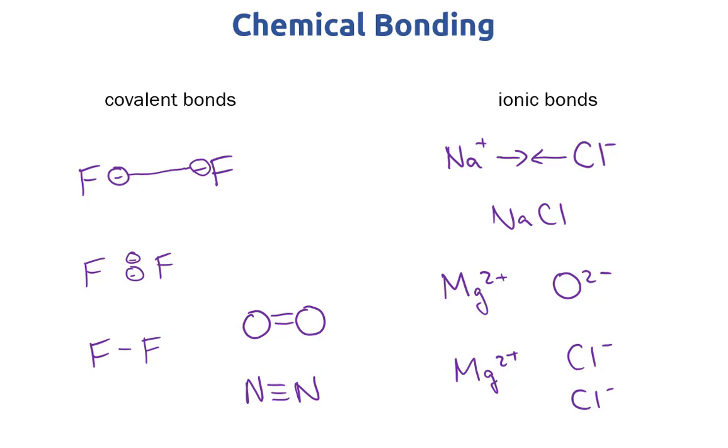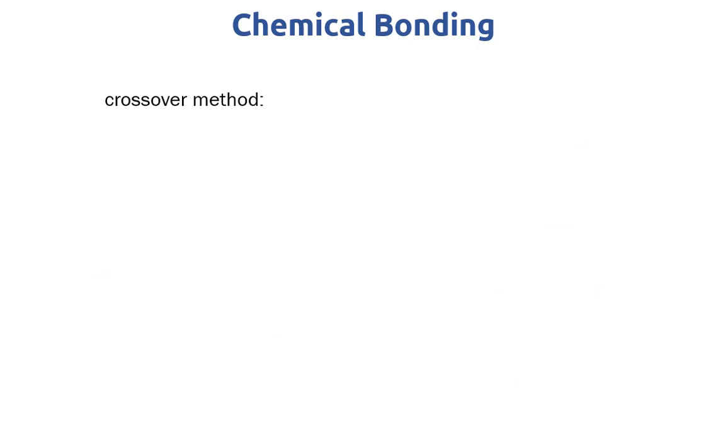So if you're not sure how to make the molecular formula from two ions with different charges we can try something called the crossover method. So how the crossover method works is let's say we have two different ions that we want to put together to make an ionic bond. So for example we have aluminum 3+ and sulfur 2-. They don't have the same charge so we can't just make it a one to one ratio of aluminum to sulfur because those charges are opposite but not equal.